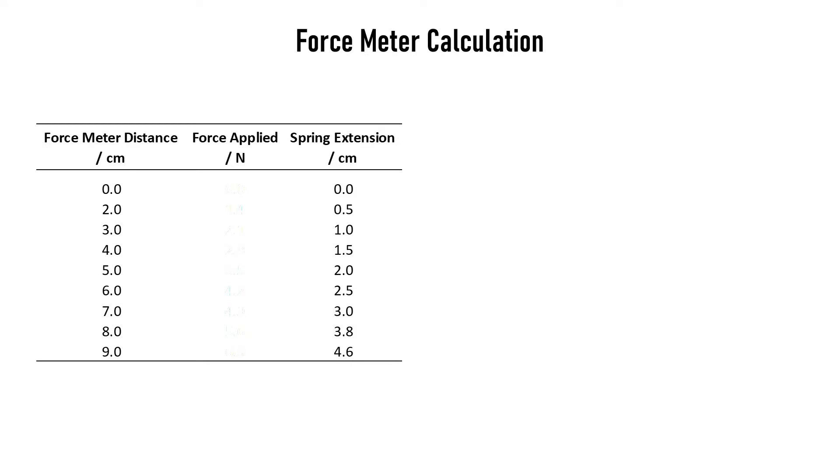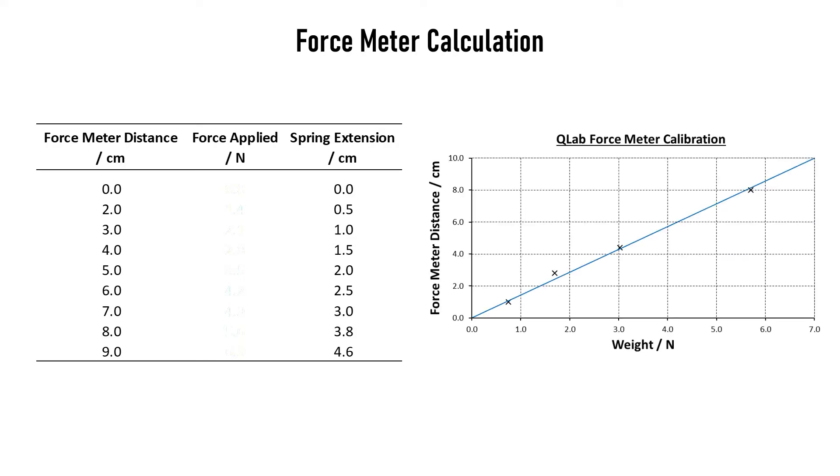So here we can see the data we collected with the force meter distance that we used to apply a known force and the amount that the spring extended. However, we first need to work out how much force was applied. So as we've done in the previous videos, we can use the force meter calibration curve or line to work out each of the forces we applied at the given distance of the elastic band on our force meter. So the first one is super easy because it's zero.